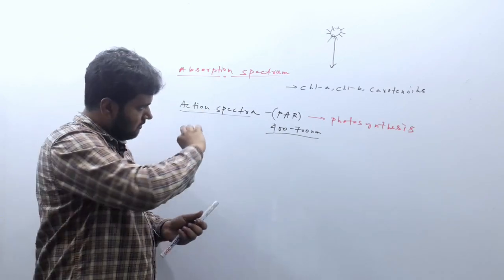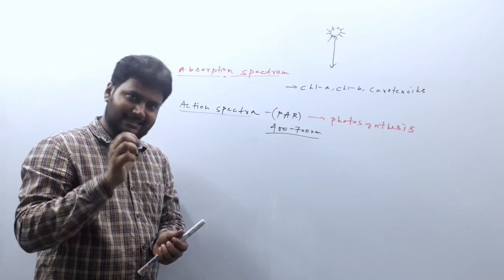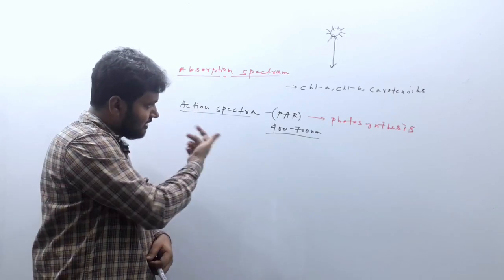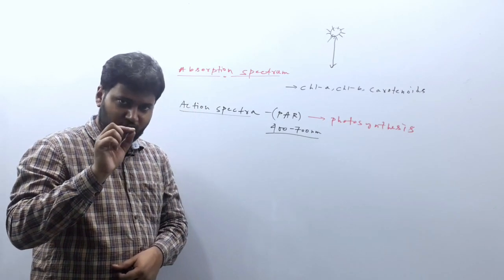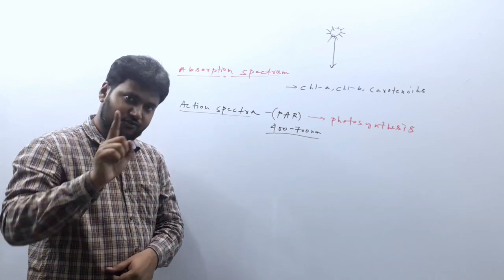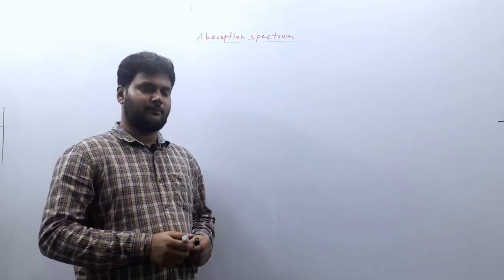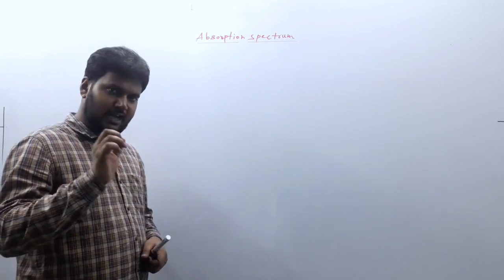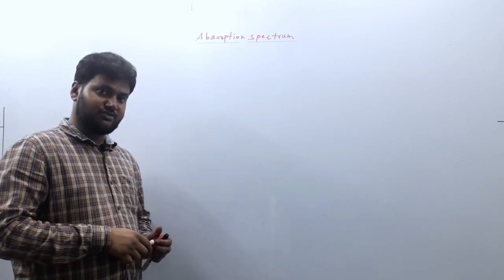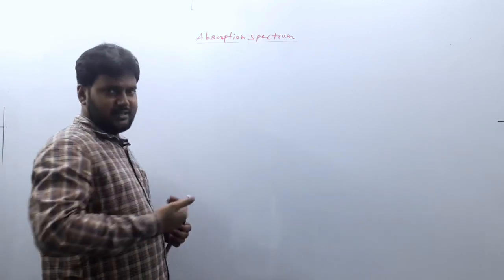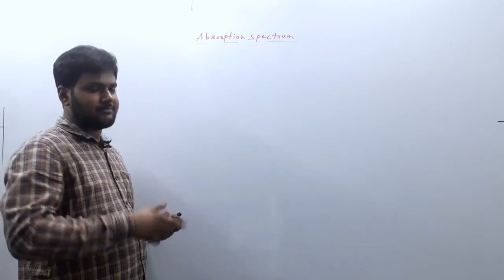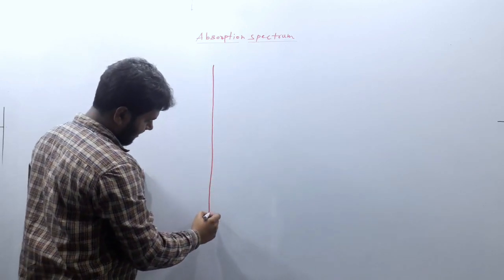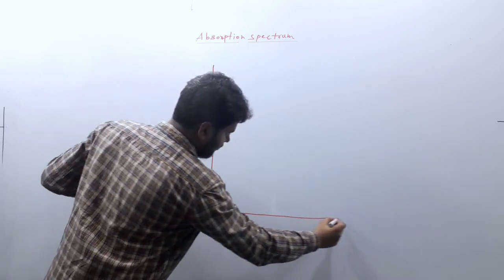Let us discuss first the absorption spectrum, and we will discuss it in one graphical method as it is given in our NCERT book. So with watching these videos, you have to also look in your NCERT books for the graphs. I am going to draw those graphs. Let us now see with graphical representation about the absorption spectrum of different photosynthetic pigments. We are drawing one 2D graph.